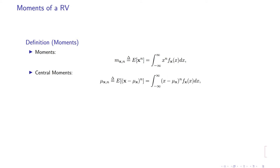This is the nth order moment. If you remove the mean — where mu_x is equal to the mean of x — you get the centralized random variable.